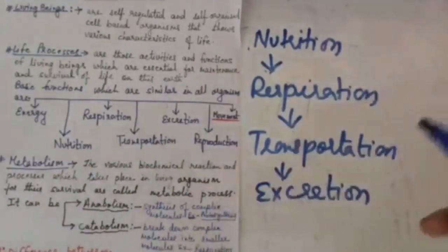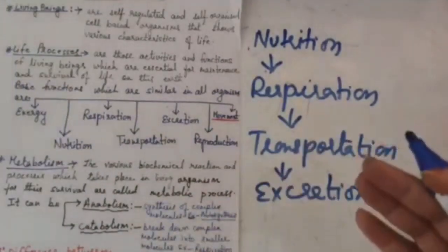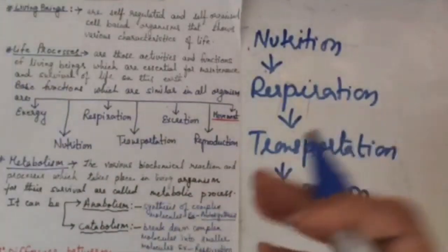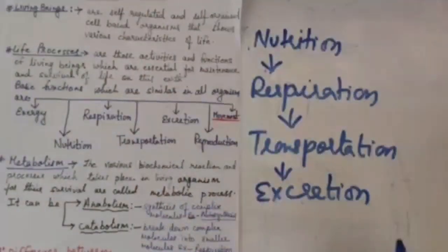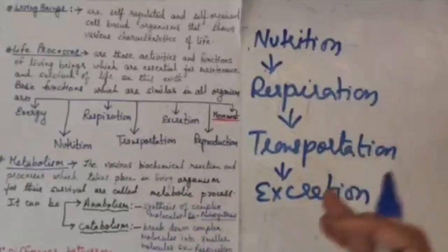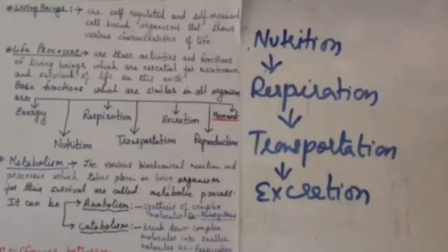Then that oxygen has to be transported to each and every cell. So therefore a mechanism of transportation is found which brings all the nutrients and other material required by the cells. Then there is excretion. A number of waste products are formed as a by-product of metabolic activities and they have to be removed from the body. So the process of removal of waste products from the body is known as excretion.